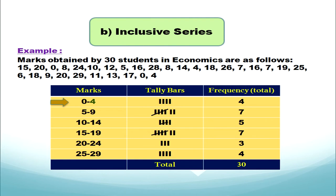The difference between exclusive and inclusive series: in exclusive series the upper limit is not counted in the class, whereas in inclusive series both lower limit and upper limit are counted to make tally bars. In exclusive series the upper limit of the previous class is the next lower limit, whereas in inclusive series the upper limit of the previous class is not equal to the lower limit of the next class.